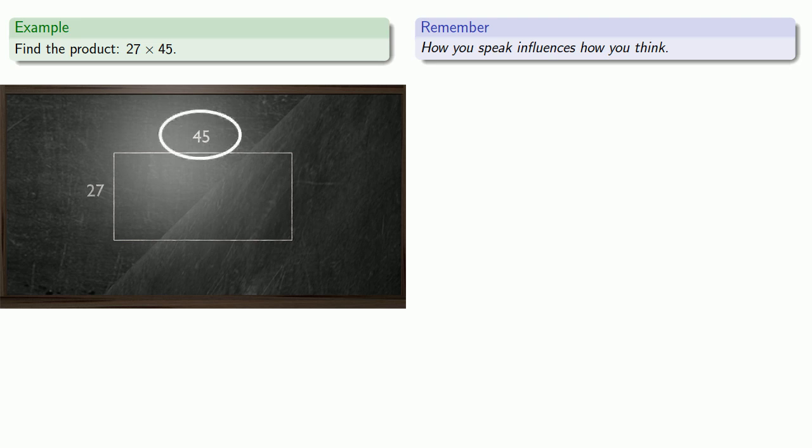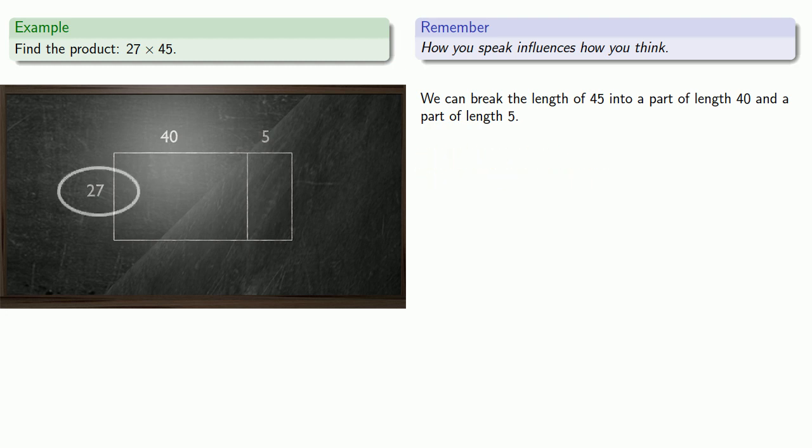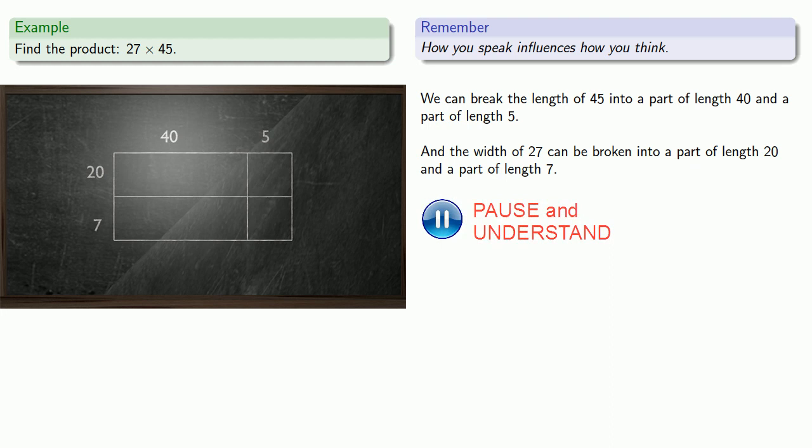What's convenient? Well, here it's useful to remember how you speak influences how you think. And so this length is 45. Well, that suggests that we can break the length of 45 into a part of length 40 and a part of length 5. Likewise, the width of 27 can be broken into a part of length 20 and a part of length 7. This gives us four smaller rectangles whose areas are easier to compute.